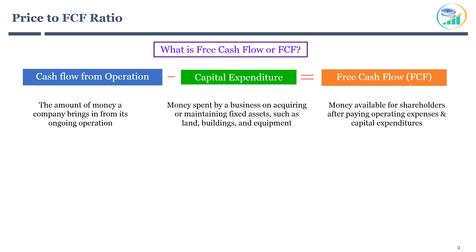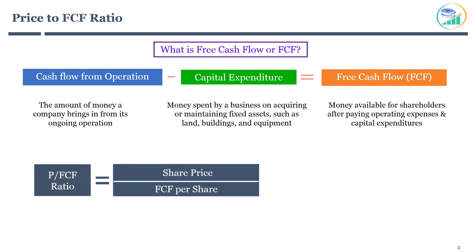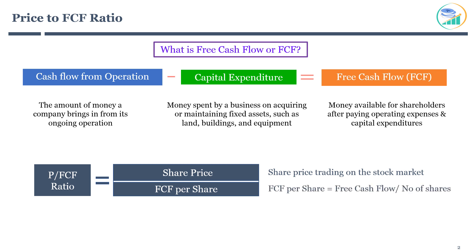Price to free cash flow ratio is calculated as the company's share price divided by free cash flow per share. You will get the share price from the stock market. Free cash flow per share is calculated as free cash flow divided by the number of shares issued by the company. Obviously, the lower the price to free cash flow, the cheaper the stock is in terms of valuation.